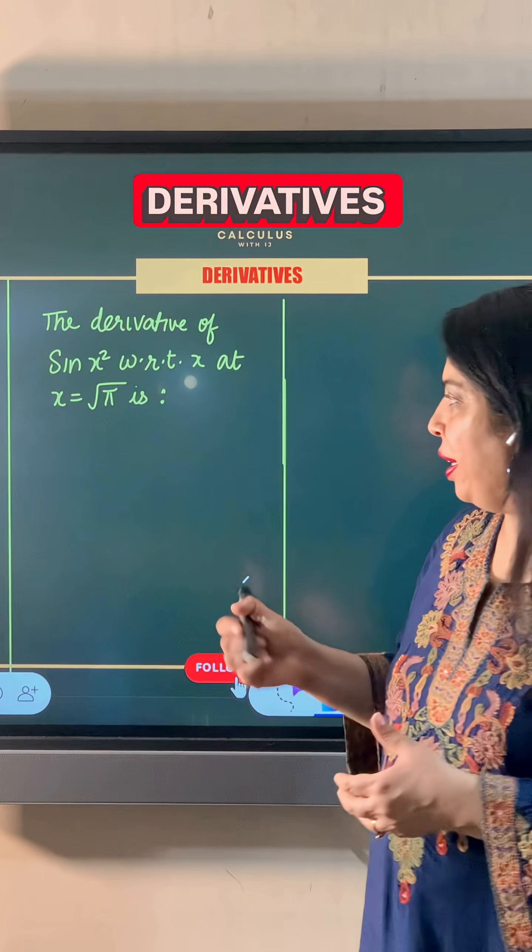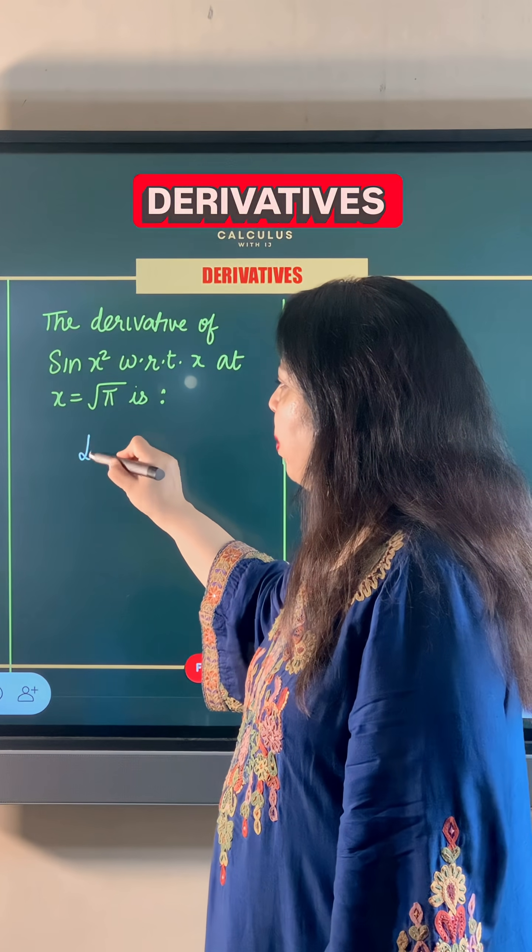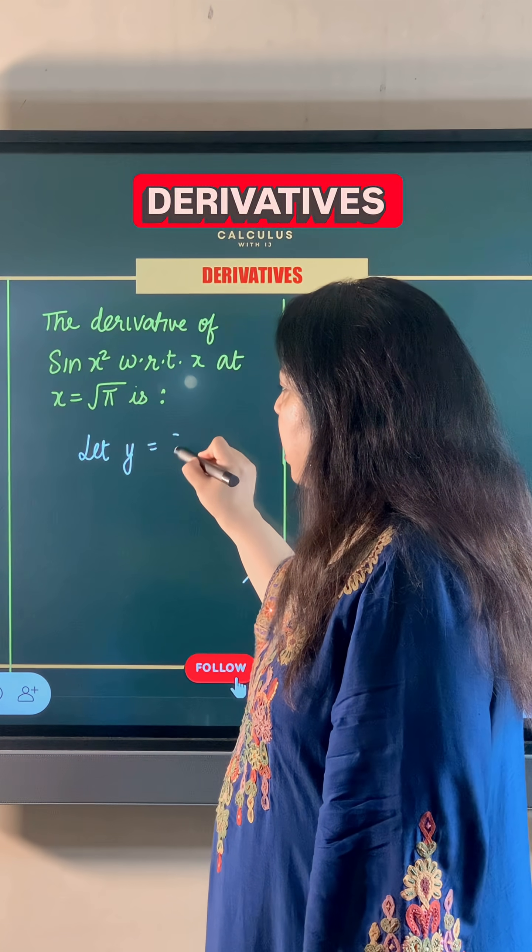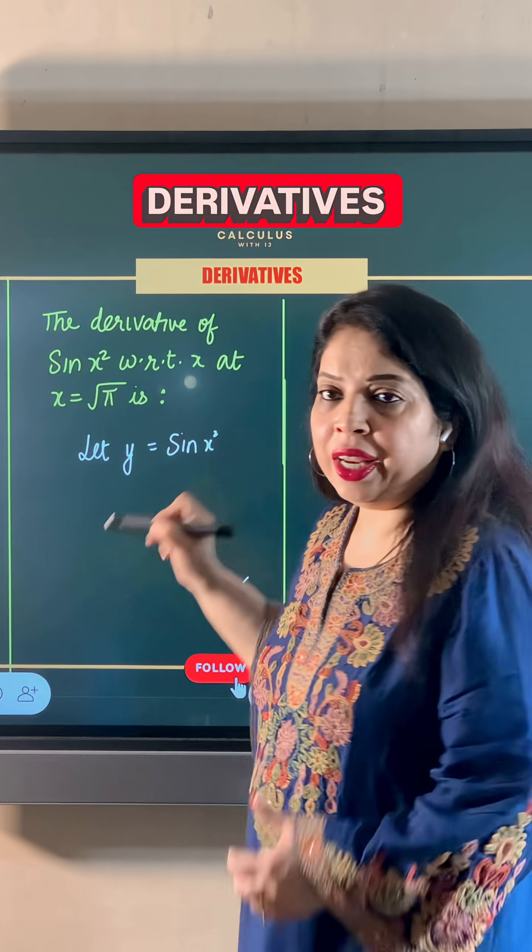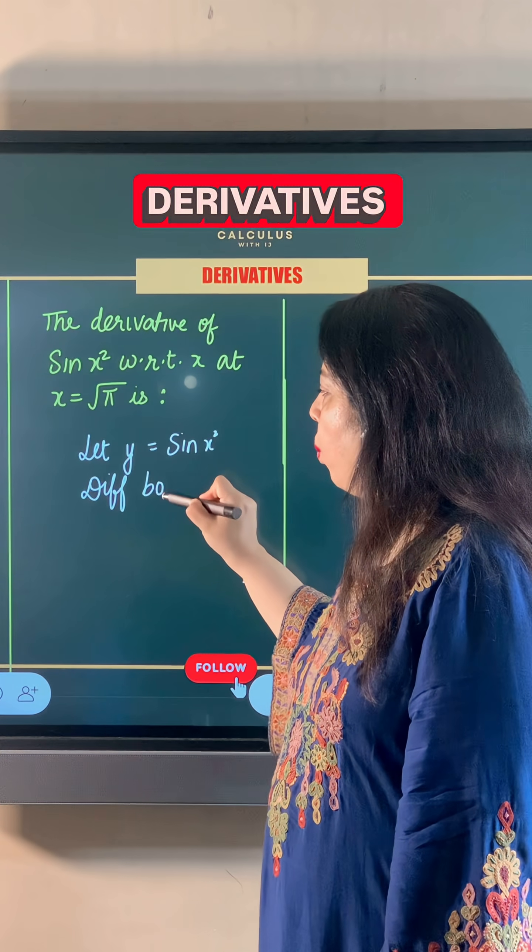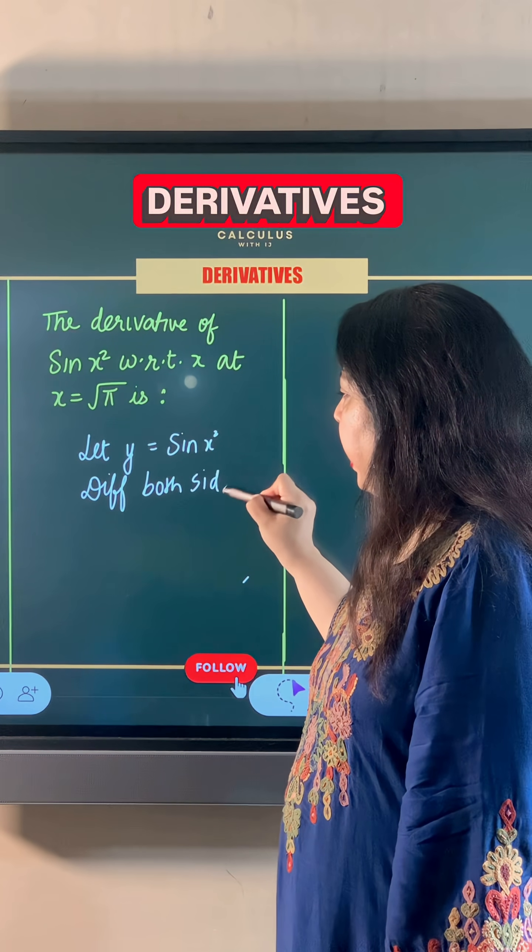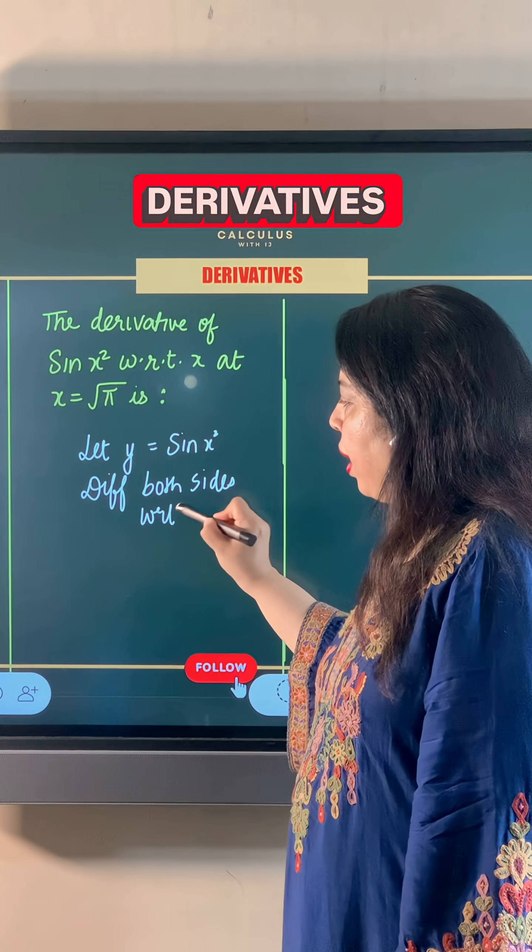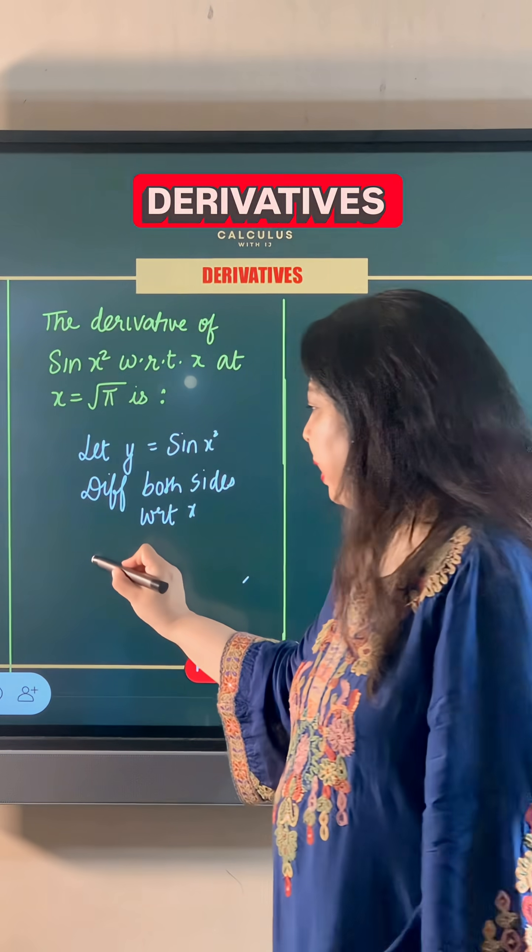To find its derivative, let's take sin x² as y. So y equals sin x². Now we can differentiate both sides with respect to x. On differentiating both sides with respect to x, we get the derivative of y as dy/dx.